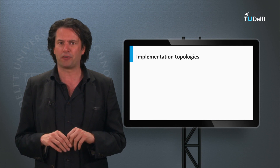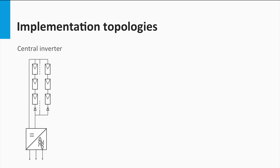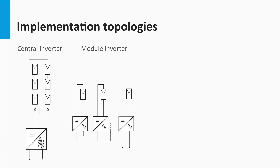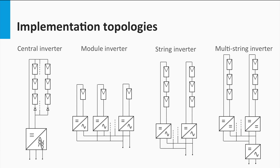Apart from the modes of operation, inverters are also classified on the basis of the implementation topology. There can be four different categories under this classification: central inverters, which are usually around several kW to 100 MW range; module inverters, or micro inverters, typically rated around 50 to 500 W; string inverters, typically rated around 500 W to a few kW — a string is nothing but the number of PV modules connected in series; and finally, multi-string inverters, typically rated around 1 kW to 10 kW range.